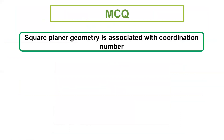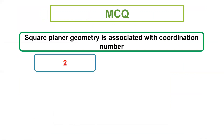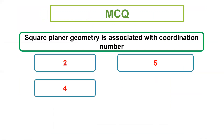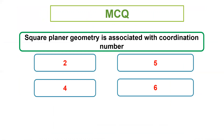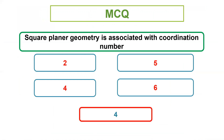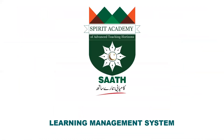MCQ: Square planar geometry is associated with which coordination number? Options: 2, 5, 4, 6. The answer is 4. Dear students, thank you very much.